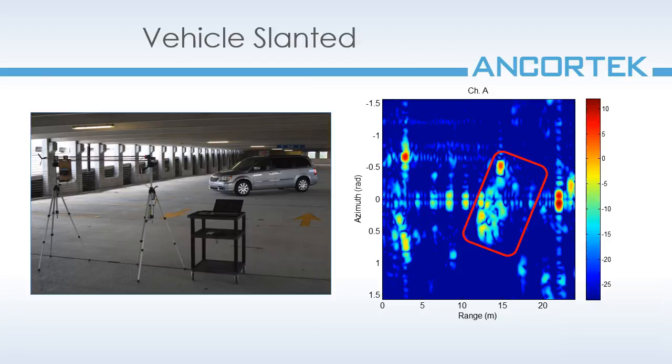Next, I brought the radar and the van to one of the lower levels of the parking garage. The van was slanted, and I can clearly see the outline of the van in the image. More interestingly, I can also observe the concrete supports that are evenly spaced along the ceiling.